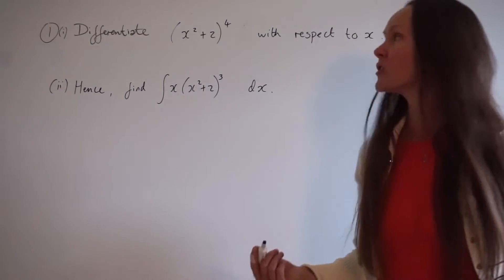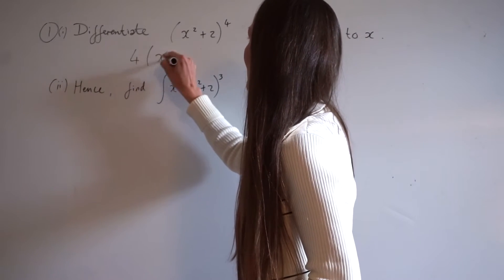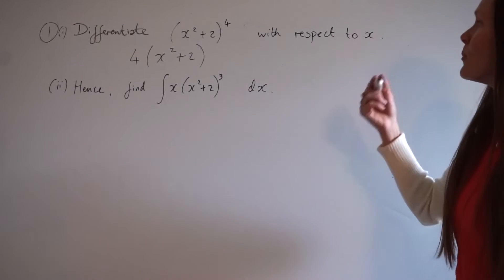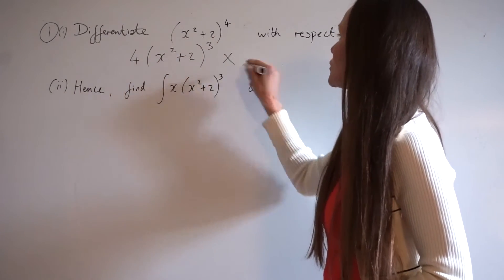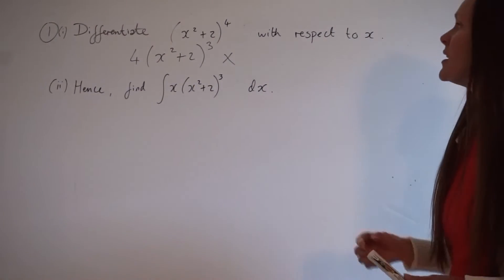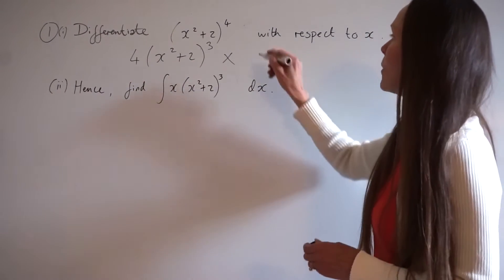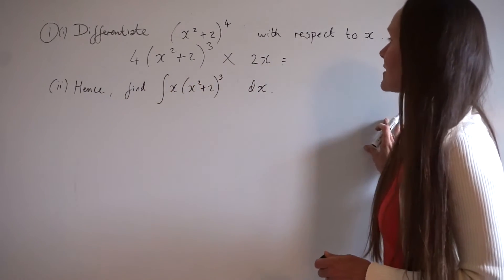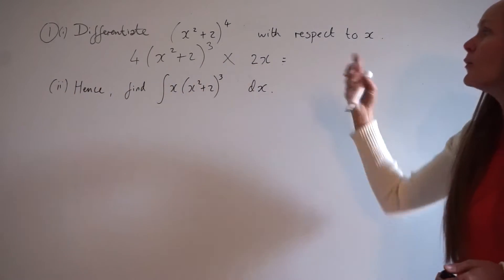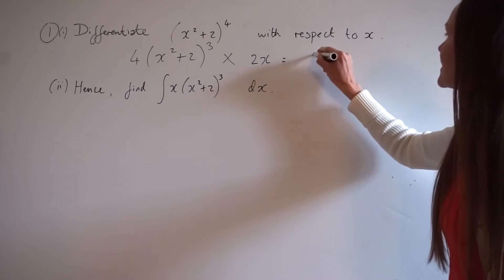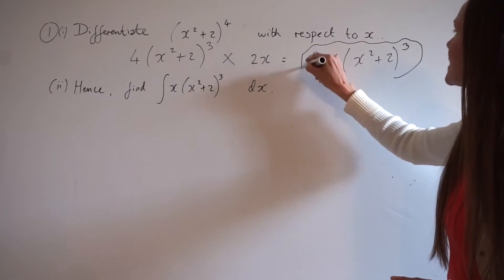When you differentiate an expression like this, you must take the power outside the brackets — so 4 — and multiply the brackets by this power. The part inside the bracket stays the same. The power outside reduces by 1, so 4 minus 1 is 3, and then you multiply by the derivative of what's inside the brackets, which is 2x. So 4 multiplied by 2x is 8x, giving a final answer of 8x(x² + 2)³.